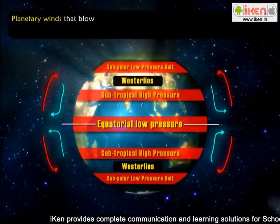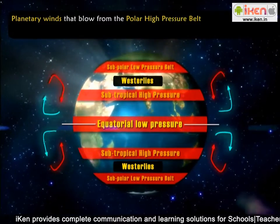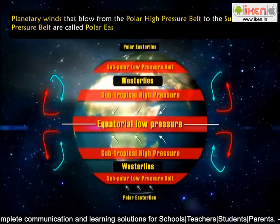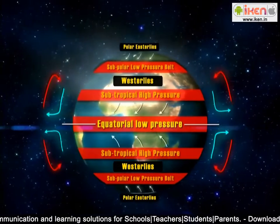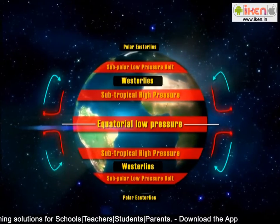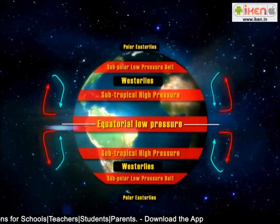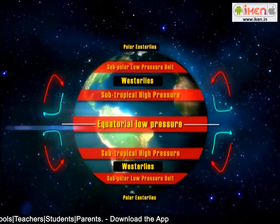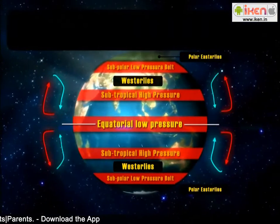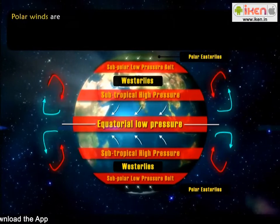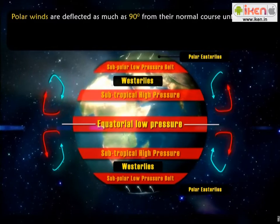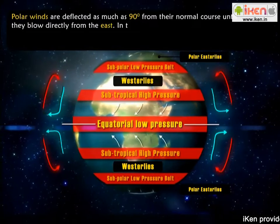Planetary winds that blow from the polar high-pressure belt to the sub-polar low-pressure belt are called Polar Easterlies. These winds are north-east in the northern hemisphere and south-east in the southern hemisphere. Polar winds are extremely cold as they come from the ice cap region. The polar winds are deflected the most, as much as 90 degrees from their normal course until they blow directly from the east.